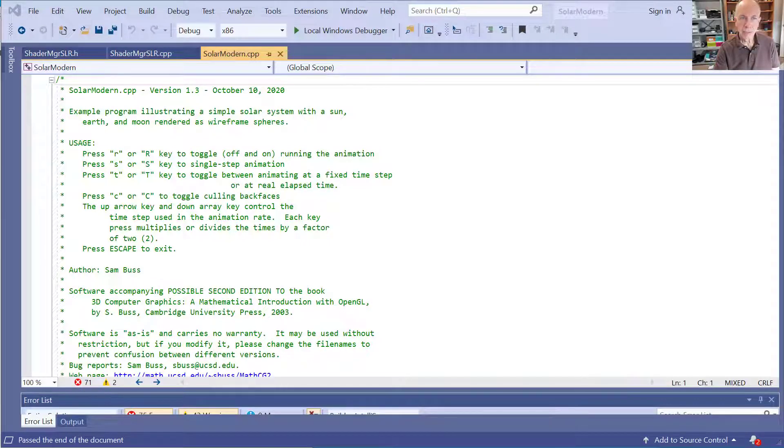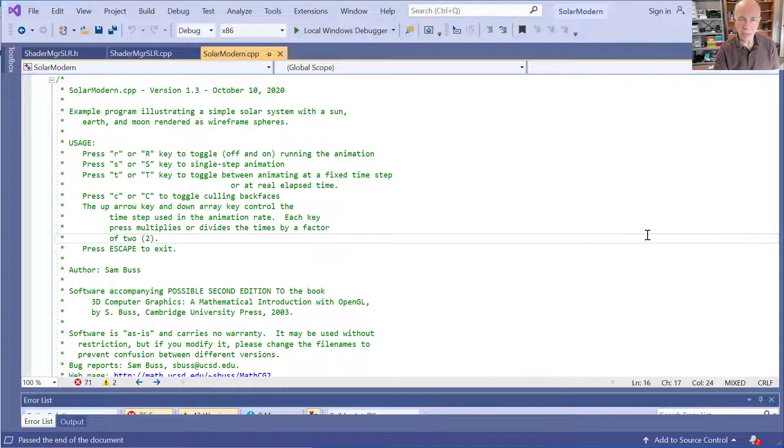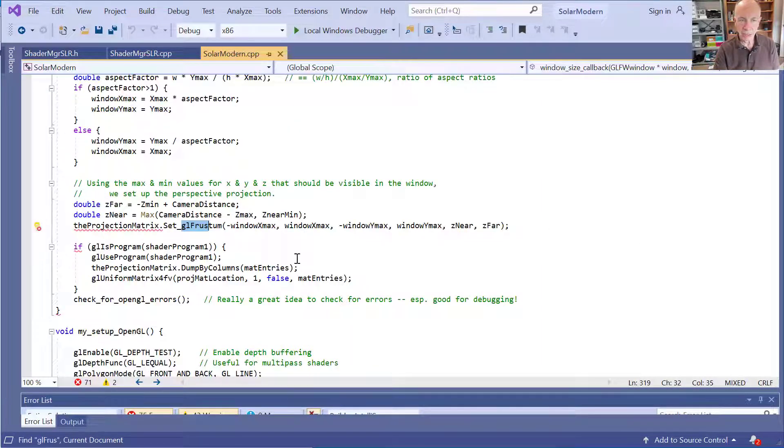Okay, so now we're looking at the Solar Modern program, the version that's on the course webpage, to see how it uses the projection matrix to map things to the screen. As you recall, it uses a model view matrix, which is loaded in whenever you draw something such as the sun or the moon or the earth and so on. There's also another place where a projection matrix is set, which I've just scrolled down to.